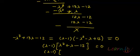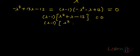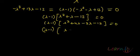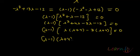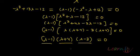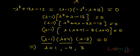Now factoring lambda squared plus lambda minus 12: we need two numbers whose product is 12 and difference is 1, which are 3 and 4. So we get lambda squared plus 4 lambda minus 3 lambda minus 12 equals 0, giving (lambda plus 4)(lambda minus 3) equals 0. Combined with (lambda minus 1), the three factors give eigenvalues lambda equals 1, minus 4, and 3. These are the characteristic roots, which are the eigenvalues of the matrix.